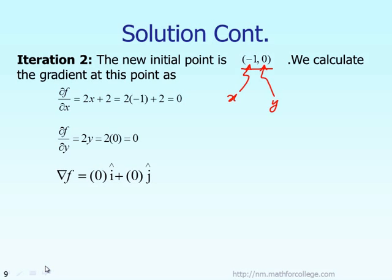Here is the gradient with respect to X, the derivative with respect to X. Here is the gradient with respect to Y or the derivative with respect to Y. And if you evaluate it at the current location which is X minus 1 and Y is 0, whenever you see X, you replace by minus 1. Whenever you see Y, you replace by 0. Then you will see the new gradient will be equal to 0 I, 0 J.